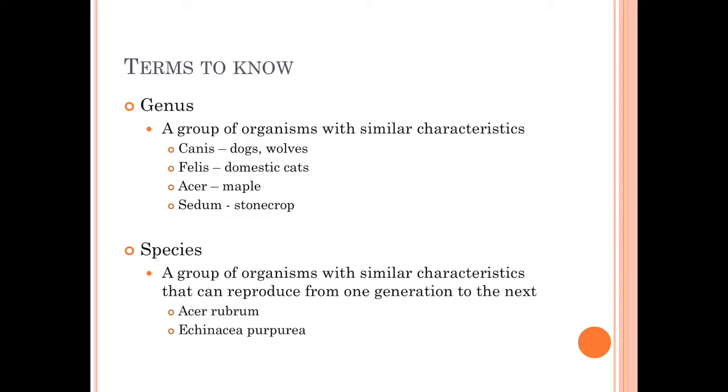Then we have a species, a group of organisms with similar characteristics that can reproduce from one generation to the next. Acer rubrum is not Acer rubrum unless it can make more Acer rubrum. Echinacea purpurea, purple coneflower, is not Echinacea purpurea unless it can make more Echinacea purpureas. If you are a species and you cannot reproduce, you are not very successful as a species.